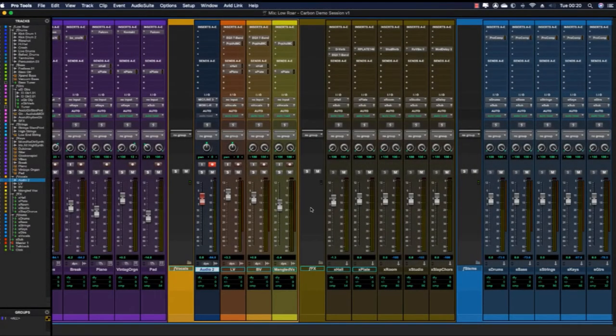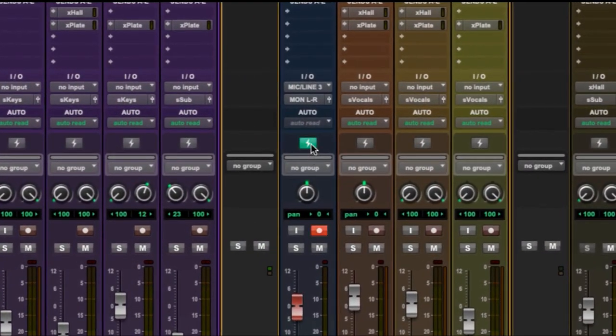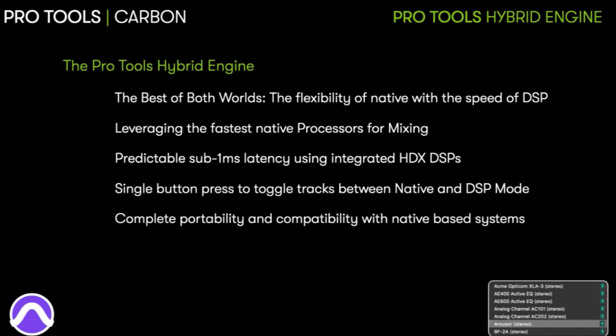Let's take a deeper look at the integration of Pro Tools and Carbon and what the hybrid engine is all about. What makes Carbon special is its DSP mode. There is a small icon located by the record button and pressing this enables DSP mode. Enabling DSP mode puts the track onto the DSP mixer on Carbon running in parallel with the native mixer. This gives you sub-1ms low latency monitoring for the recording path, while leaving the rest of the mix able to make use of the power from the CPU. When you're ready to mix, you can put any DSP mode tracks back into native mode and open that session on any Pro Tools system, whether native or HDX.